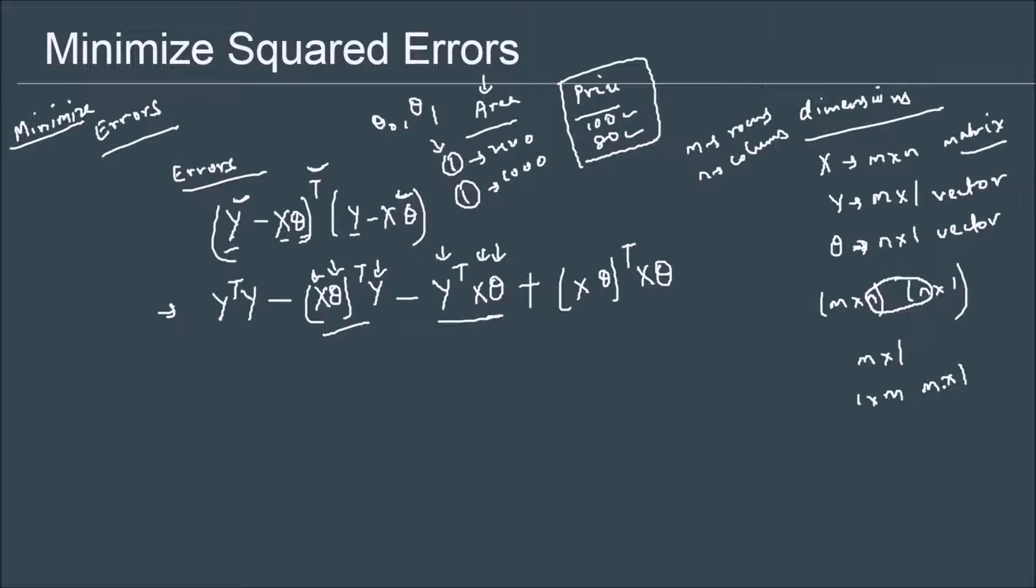...m cross 1, then I will be left with a 1 cross 1 matrix for this quantity, for this whole quantity. Now a 1 cross 1 matrix is actually a scalar, and it turns out that if I do the same thing for this quantity, this will also turn out to be a scalar.